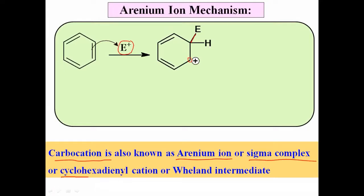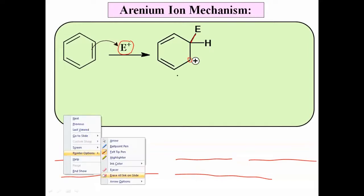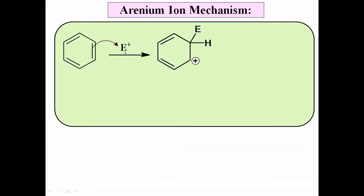The carbocation intermediate is also known as the arenium ion, sigma complex, cyclohexadienyl cation, or Wheland intermediate. Because of this intermediate, the mechanism is called the arenium ion mechanism. This carbocation undergoes delocalization — it shows a resonance effect.